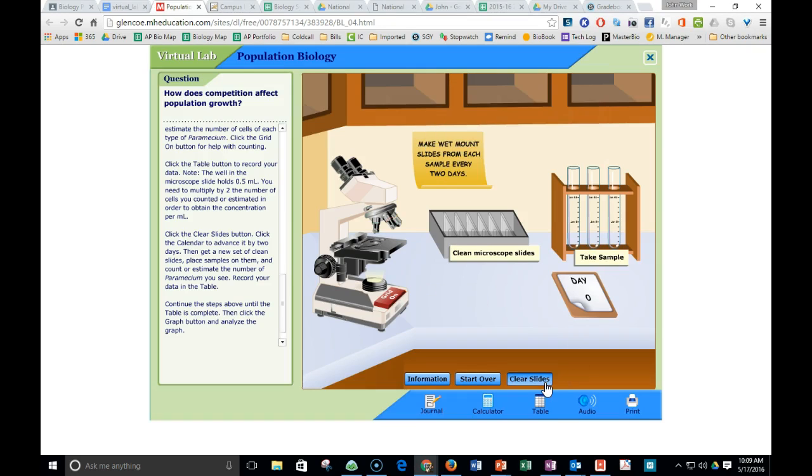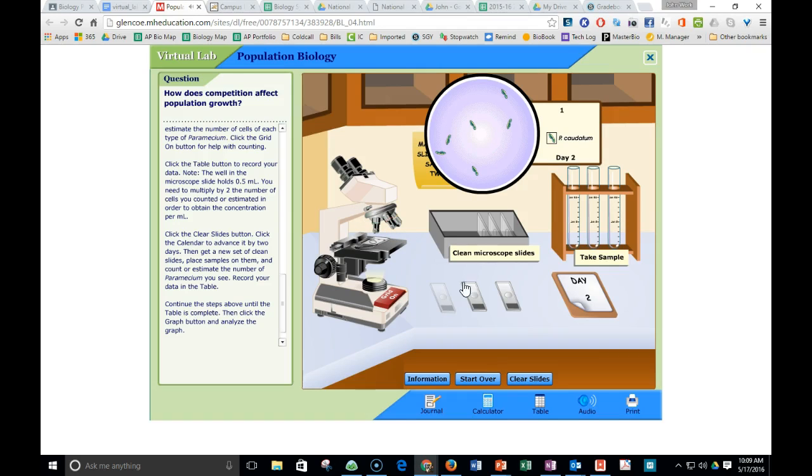And so when you're done, you're going to clear the slide and you're going to click the calendar and two days have advanced. And so now set up the microscope slides again. So you take one milliliter out each time. And so what you're looking at is a population density. So now you're looking at the caudatum by itself. There's one, two, three, four, five, six. You got to count. If it helps you, you can click this grid on. And that way when it gets to be a lot of them, it helps to just look at each square by itself.